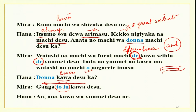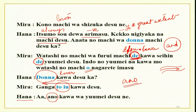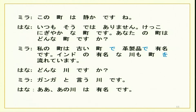Why is 'ano' used here? You cannot see Ganga anywhere in the conversation — Hana and Meera are just talking about it. Ganges is a famous river and Hana-san has also heard of it. She knows of the river, so she used 'ano.' When the subject is known to both the speaker and the listener, 'ano' can be used. Now you can use donna and particle 'de' to join two sentences.